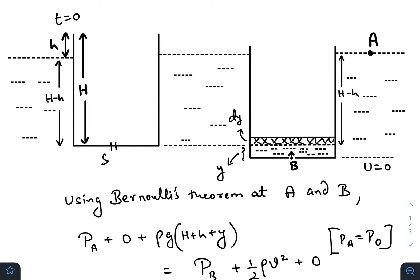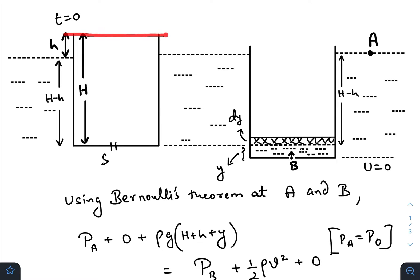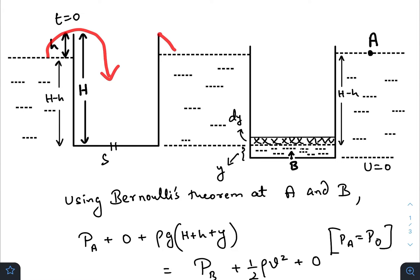Water starts entering through this hole, and as it does, the container goes below its initial level. A time will come when the brim of the container matches the level of the water, and after that water will start entering from the opening. We need to find the time from when the hole is made until the brim matches the water level.